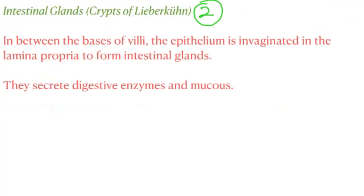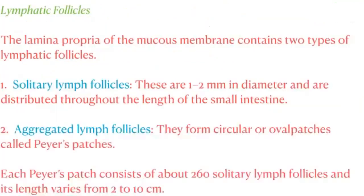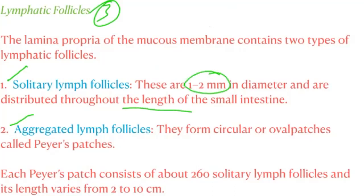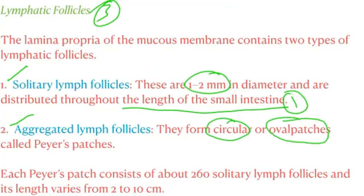The second feature is intestinal glands, or crypts of Lieberkühn. In between the bases of the villi, the epithelium is invaginated into the lamina propria to form the intestinal glands, which secrete digestive enzymes and mucus. The third feature is lymphatic follicles. The lamina propria contains two types: solitary lymphatic follicles and aggregated lymphatic follicles. Solitary lymph follicles are 1 to 2 mm in diameter and distributed throughout the length of the small intestine. They aggregate at some places forming Peyer's patches.